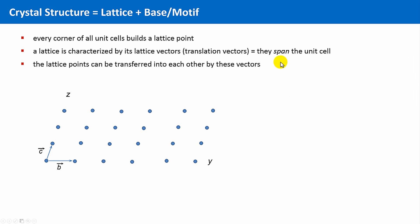A lattice is characterized by its lattice vectors. These are translational vectors. It is also sometimes said that these vectors span the unit cell. And the lattice points can be transferred into each other by these vectors. Along the B direction, along the C direction, and of course, the third dimension as well.